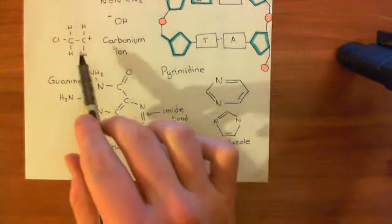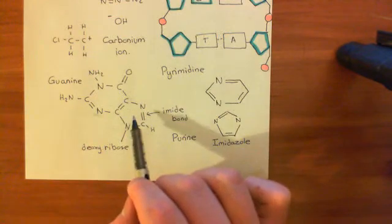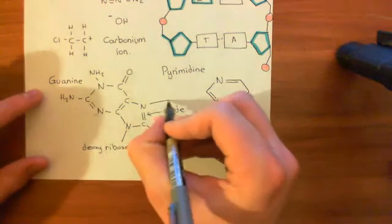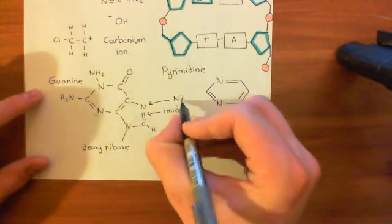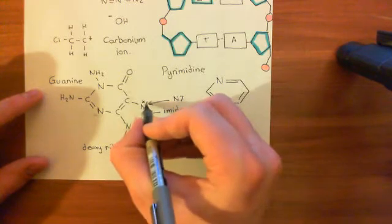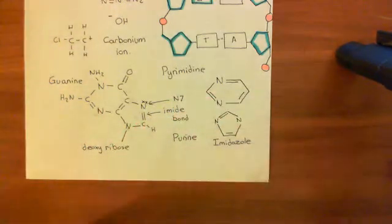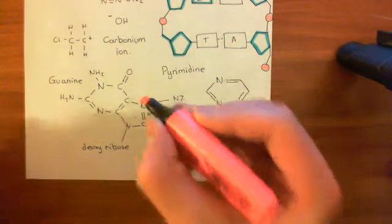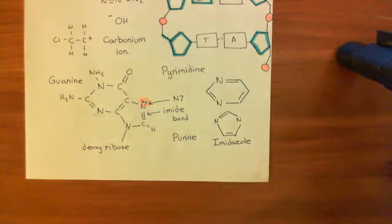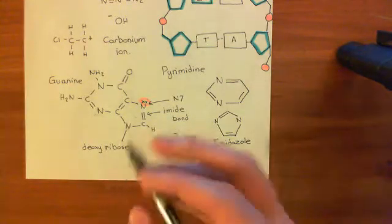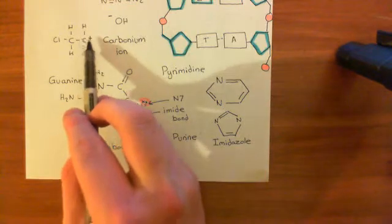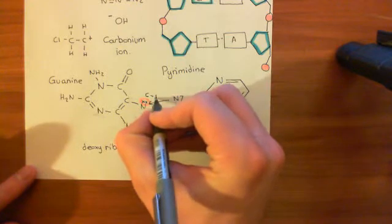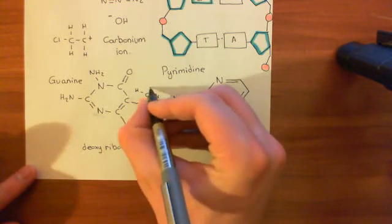You can attach carbonium ions onto these guanine organic bases because this nitrogen, known as the N7 nitrogen, has a lone pair of electrons on it. This lone pair of electrons is a centre of negative charge. So what can happen is the positive charge of the carbonium ion — this positive charge on this carbon atom — can come and bind with this centre of negative charge.